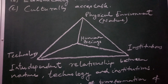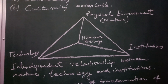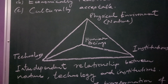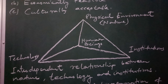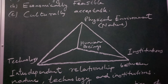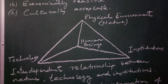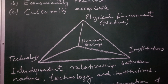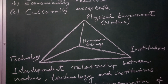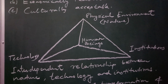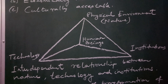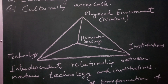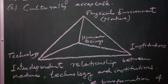The figure that you are seeing shows the interdependent relationship between nature, technology and institution. Here we have human beings interacting with nature. Human beings have made institutions and with the help of technology, they are converting natural things into a resource. So there is an interdependent relationship between nature, technology and institution. If any one of these is missing, we are not able to convert a thing into a resource.